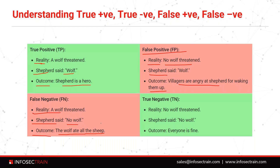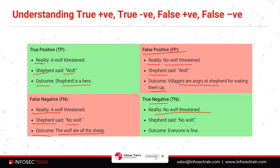In reality there was a wolf, but Shefford said there is no wolf — maybe he was sleeping, or a new kind of wolf entered the village that Shefford was not aware of. The outcome is the wolf ate all the sheep because everyone was sleeping and trusted Shefford. True negative would be: no wolf was there in reality, Shefford also said no wolf — outcome is everyone is fine, chilling, and at ease.